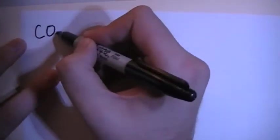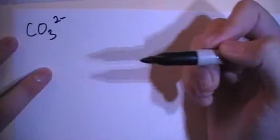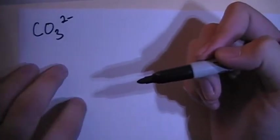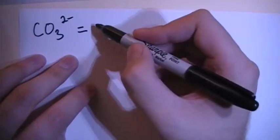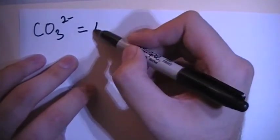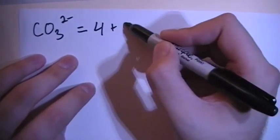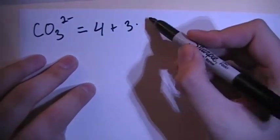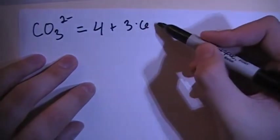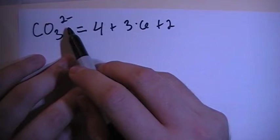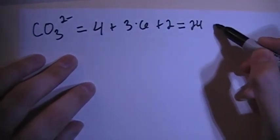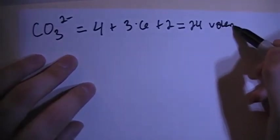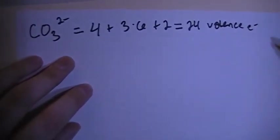We've got CO3 with a negative 2 charge. In terms of valence electrons brought in, that's going to give us 4 electrons from the carbon plus 3 oxygens, each bringing in 6 electrons. And then add 2 more because of the minus 2 charge, so that's going to give us a total of 24 valence electrons.